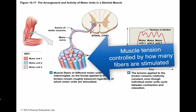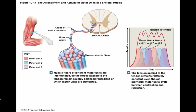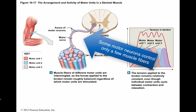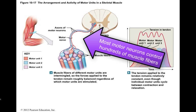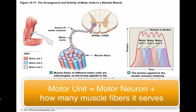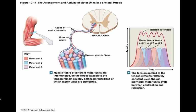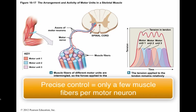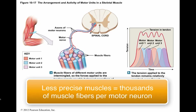A typical skeletal muscle contains thousands of muscle fibers. Some motor neurons control a few muscle fibers, but most control hundreds of them. All the muscle fibers controlled by a single motor neuron constitute a motor unit. The size of a motor unit is an indication of how fine the control of the movement can be. In the muscles of the eye, where precise control is extremely important, a motor neuron may control four to six muscle fibers. We have much less precise control over our leg muscles, where a single motor neuron may control a thousand to two thousand muscle fibers.